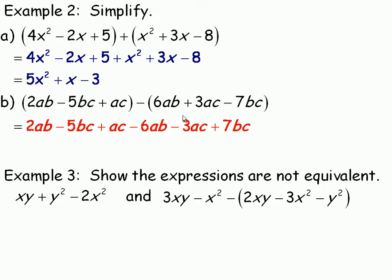So that's why all the signs change. 6ab becomes minus 6ab. Plus 3ac becomes minus 3ac. And minus 7bc becomes plus 7bc. And now we collect the like terms.